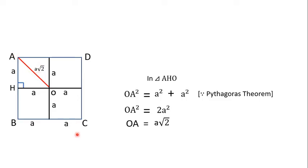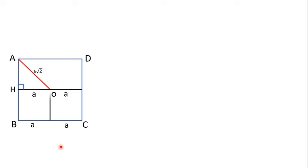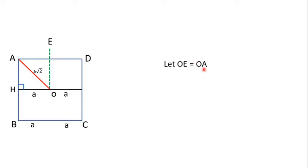So this is the first step. The next step: this vertical line has to be extended. Let us do that extension in broken lines, calling this new point E. We extend the vertical line from O to E such that OE is equal to OA. Since OA = A√2, therefore OE is also equal to A√2.